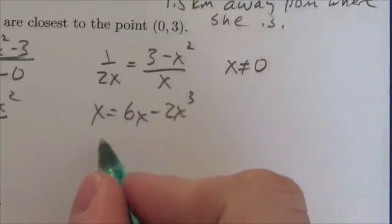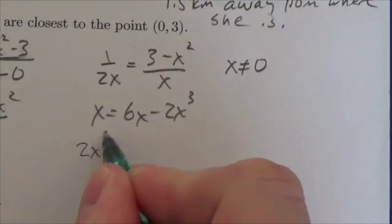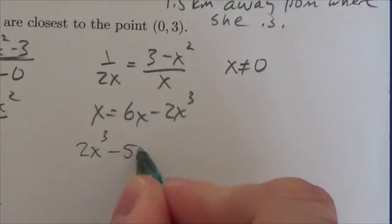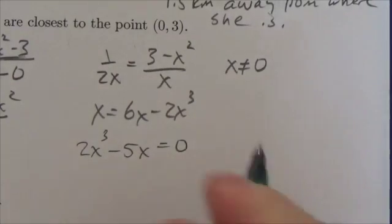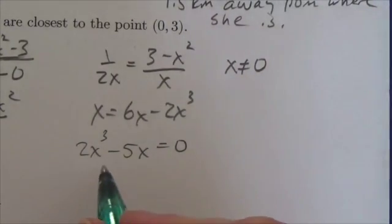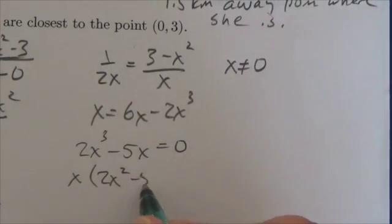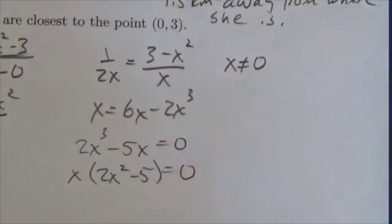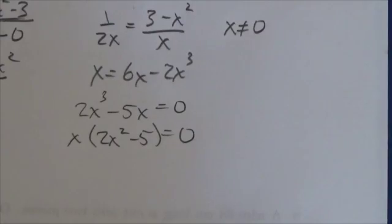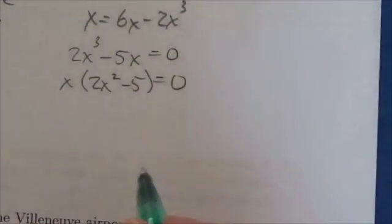Let's bring everything over the right hand side because it makes things positive. So 2x cubed minus 5x is equal to zero, and if we take out what's common here, we'll take out the common x and we're going to get 2x squared minus 5 equals zero.